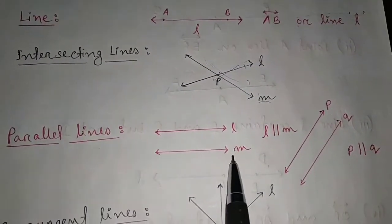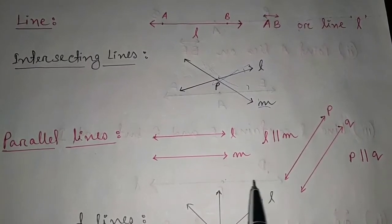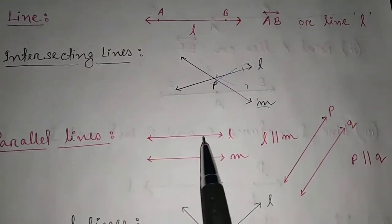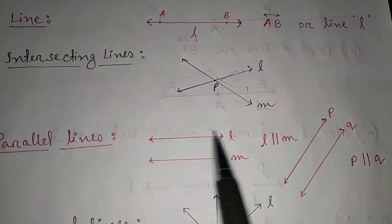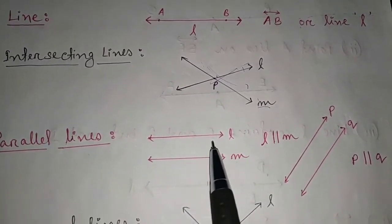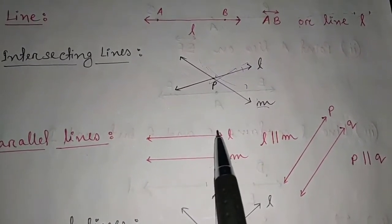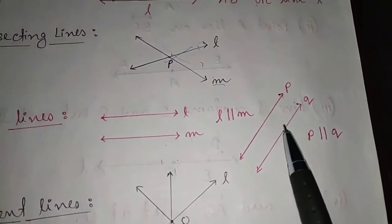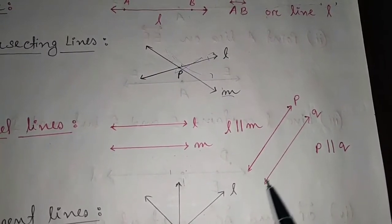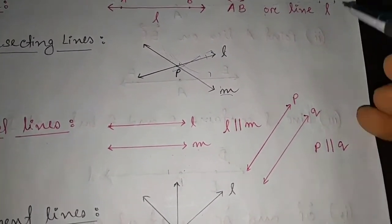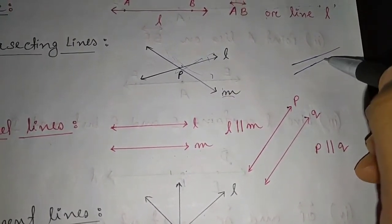Next is parallel lines. Parallel lines means two lines lying in the same plane that do not intersect even if they are extended in both directions. You can see line L and line M — when we extend these two lines, they will never meet each other because they are equal in distance. Similarly, lines P and Q are also at equal distance and will never meet.